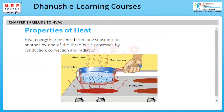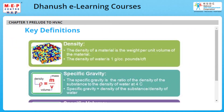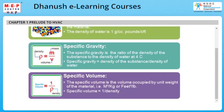Now let us learn some key definitions used in heat and temperature. Density is the weight per unit volume of a material. The density of water is 1 gram per cubic centimetre. Specific gravity is the ratio of the density of the substance to the density of water at 4 degrees centigrade. Specific volume is the volume occupied by unit weight of the material, i.e., meter cube per kg or feet cube per pound. Specific volume equals 1 per density.